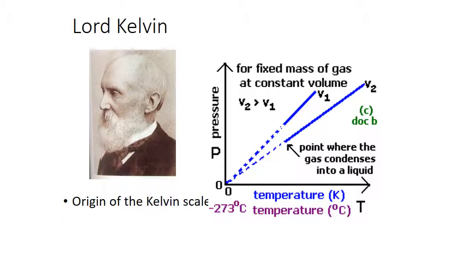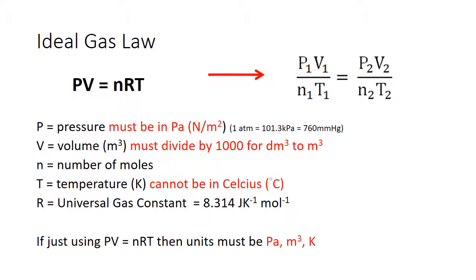Lord Kelvin discovered the origin of the Kelvin scale. The ideal gas law is PV = nRT, where P is pressure in pascals or N/m², volume is in metres cubed (divide by 1000 for dm³ to m³), n is number of moles, T is in Kelvin, and R is the gas constant 8.314 J/K/mol. If using PV = nRT, units must be pascals, metres cubed, and Kelvin.